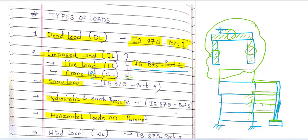After that, you have snow load. If you have a hilly area, then snow loading applies. We look at the roof — how much is the depth, how much is the thickness of the snow? These things come under IS 875 Part 4, where specifications are given on how to calculate, what values to use, and under which conditions.